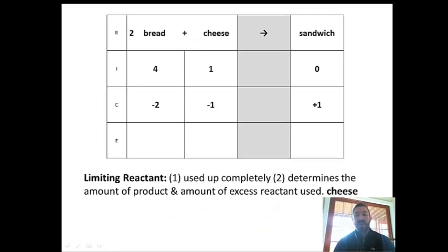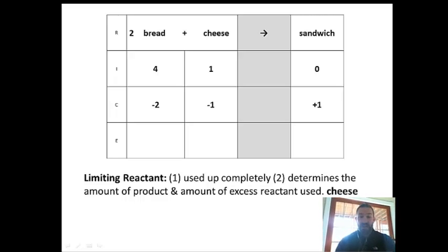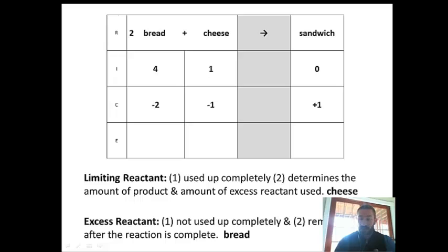The limiting reactant is defined as the reactant that is completely used up in the reaction. It also determines the amount of product and the amount of excess reactant that is used. In our example, cheese is our limiting reactant. The excess reactant is not used up completely and remains after the reaction is complete — in this example, the excess reactant is the bread.